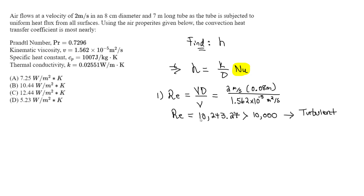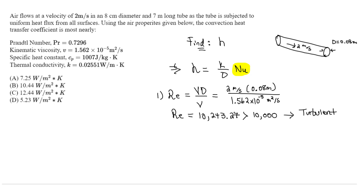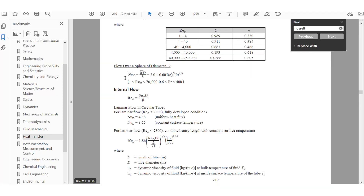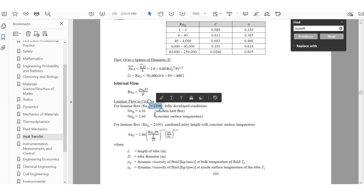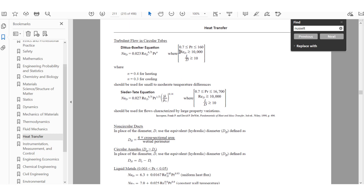We have turbulent flow in this pipe. The tube has a diameter of 0.08 meters with air flowing at 2 meters per second. Laminar flow would require a Reynolds number below 2,300 — that's important to note. Since we're above 10,000, we have turbulent flow. To use the turbulent flow equations in circular tubes, the Reynolds number must be above 10,000, which our value satisfies.